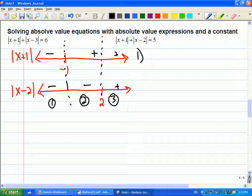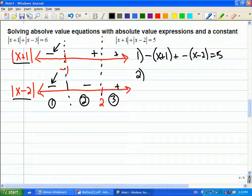So the first equation is going to be applying a negative to both of the absolute values. So it's going to be negative x plus 1 plus negative x minus 2 equals 5. And the second equation that I'm going to get... Actually, maybe I'll leave a little bit of room.